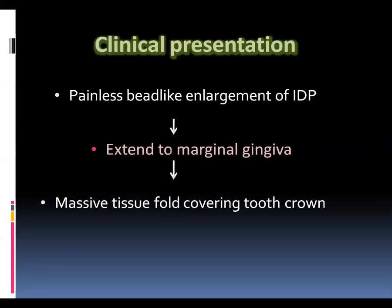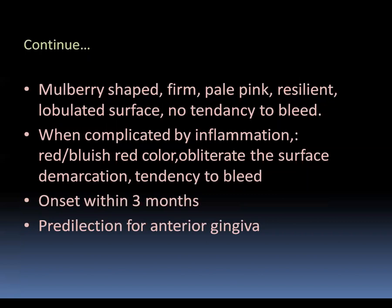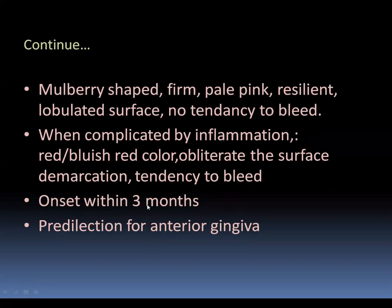There is painless bead-like enlargement of the interdental papilla, extending to the marginal gingiva, with massive tissue folds covering the tooth. It is mulberry-shaped, firm, pale pink, and resilient, with a lobulated surface and no tendency to bleed. This is a very important feature of drug-induced gingival enlargement — there is less bleeding compared to inflammatory enlargement. However, in mixed cases where both inflammation and drug effects are present, there is a tendency to bleed. Onset occurs within 3 months, most commonly in the anterior region, and may later extend posteriorly.